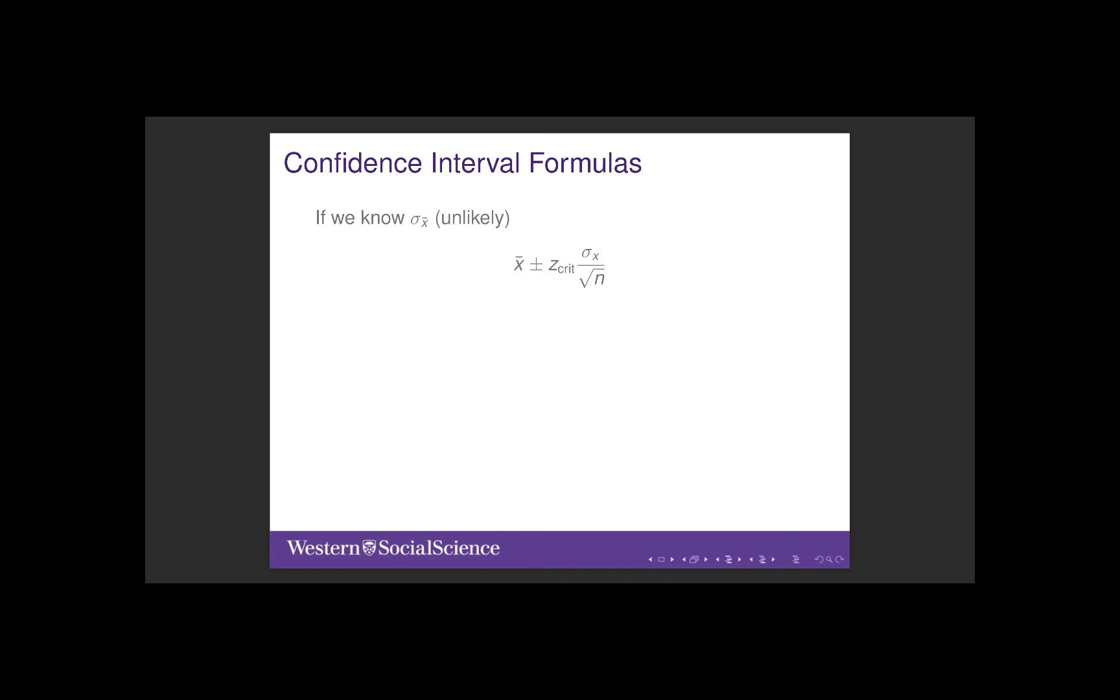Note that z-crit is the critical value of z that puts the appropriate probability in the tail. If we want a 95% confidence interval, we need 5% to be spread across both tails of the distribution. That means we need 2.5% in each one. To find this in the probability table, look at page 249 in the book. We're looking for the entry in the area beyond z column that is 0.0250. We find this to be 1.96. So if you're using the standard normal distribution, we would use 1.96 as z-crit.